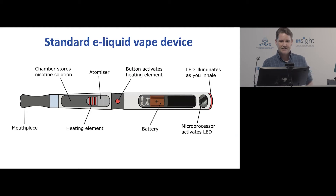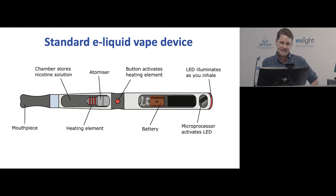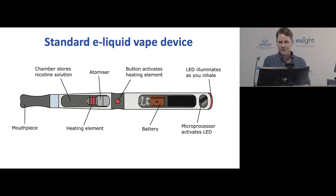A standard e-liquid vaporising device — what we might call a first-generation style device — is fairly simple. It has a mouthpiece, a heating element that heats the chamber storing the propylene glycol, vegetable glycerin and nicotine solution, and an atomiser that triggers the heating element. Sometimes a button activates it, sometimes it's automated. There's a little battery and microprocessor to run the device as well.